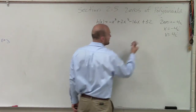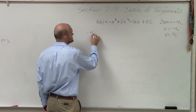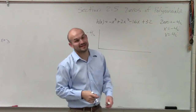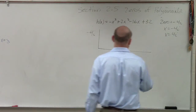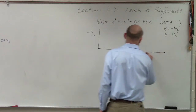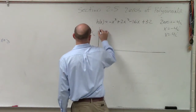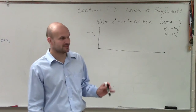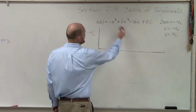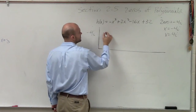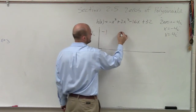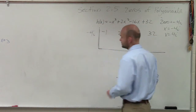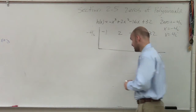Our zero is negative 4i. How are we going to do synthetic division with an imaginary number? Just like we do synthetic division with a real number. Just because it's imaginary, don't hold a grudge against it. So we take our coefficients, make sure they're in standard order: negative one, two, negative sixteen, and thirty-two.